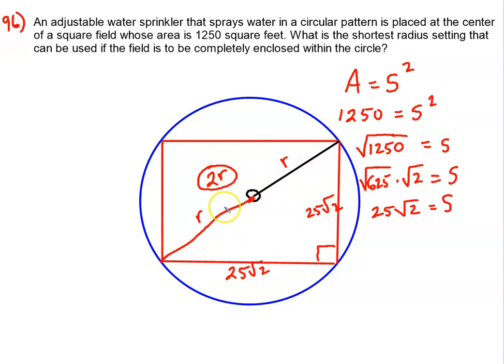So c squared—well, c is the entire length of that diagonal, which is 2r. When you square that, you get 4r squared, just come over here: 4r squared equals 25 root 2 squared plus 25 root 2 squared.